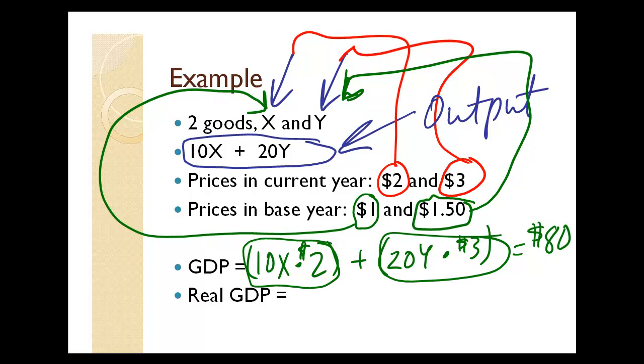GDP is simply two things multiplied together: current year output times current year price.